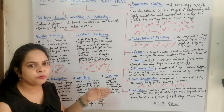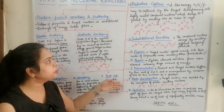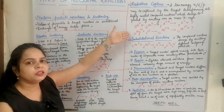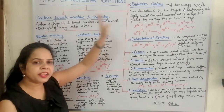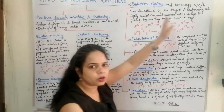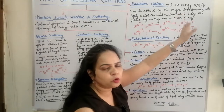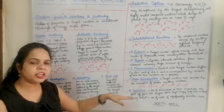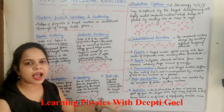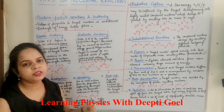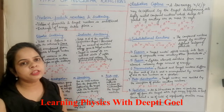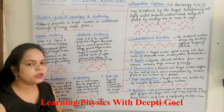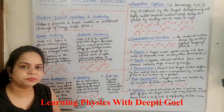The difference between photodisintegration and radiative capture is that in radiative capture one of the products is a photon, whereas in photodisintegration one of the reactants is a photon. This is the major difference between radiative capture and photodisintegration.